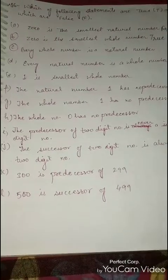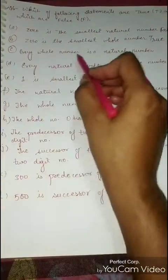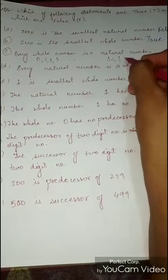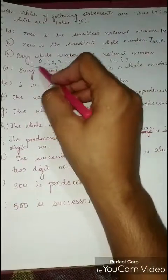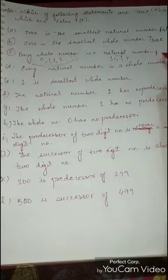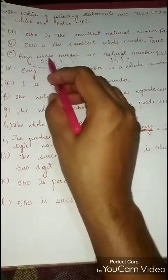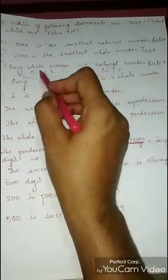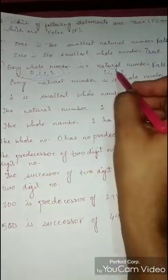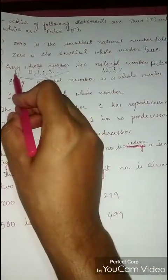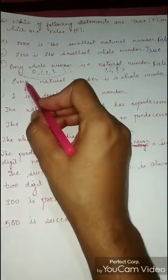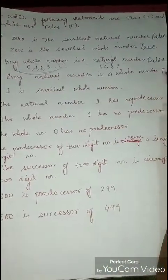Next statement: every whole number is a natural number. Whole numbers are 0, 1, 2, 3... and natural numbers are 1, 2, 3... Can we say every whole number is a natural number? No, because 0 is not in natural numbers. Every whole number is not a natural number, but every natural number is a whole number. So this is False.